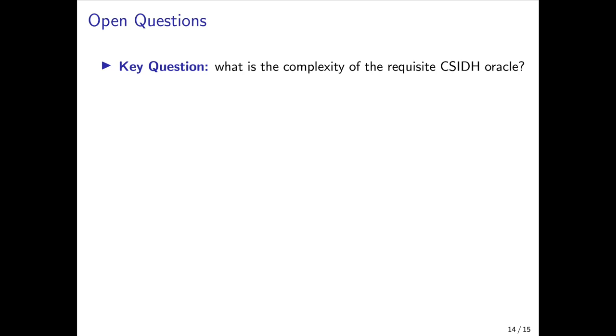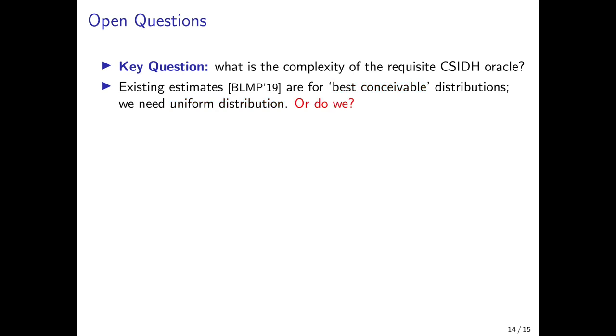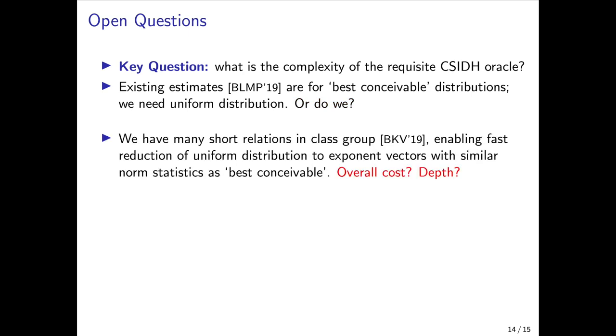I'll wrap up now with a few open questions and directions for further research. Probably the most important question is to establish the true complexity of the CSIDH oracle in order to complete the full attack. The existing estimates recall are for the so-called best conceivable distribution which is close to but not quite the uniform distribution, and the sieving attacks need the uniform distribution. Or do they? That is, could the attacks work by evaluating on an approximately uniform superposition? Even if we do need a truly uniform distribution it's not so difficult to achieve. The work of Beullens et al. explicitly computed the group on which CSIDH-512 is defined and their work enables the fast transformation of the truly uniform distribution to exponent vectors that have very similar statistics as the best conceivable distribution. So it just remains to estimate the quantum cost and depth of this procedure.